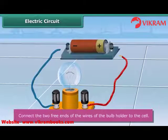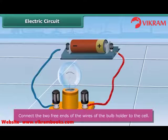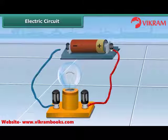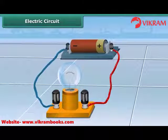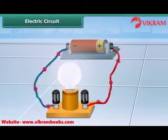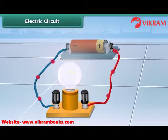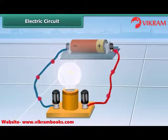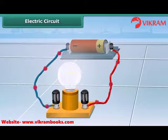Connect the free end of one wire to the positive terminal of the cell, and the free end of the other wire to the negative terminal of the cell. This may be done with the help of a rubber band or an adhesive tape. After the connection, you can see that the bulb lights up.